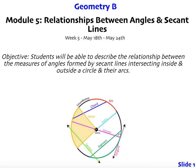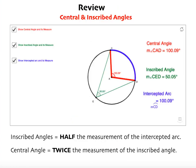Welcome to module 5. In this module we're going to be exploring the relationships between angles and their secants, and hopefully by the end of this video you'll feel pretty comfortable finding missing angles or missing arcs when you find that secant lines intersect inside of a circle, outside of it, or on the circle. But before we do that, let's take some time to review what we learned last week, which were central and inscribed angles.